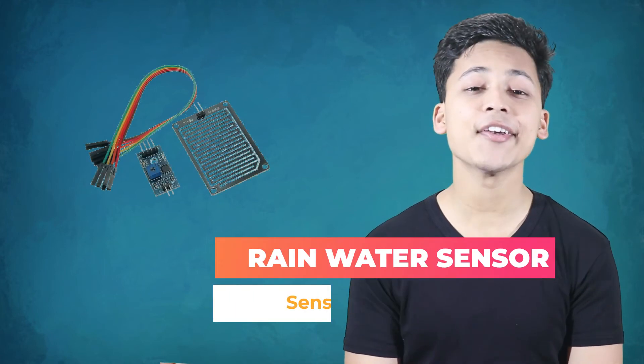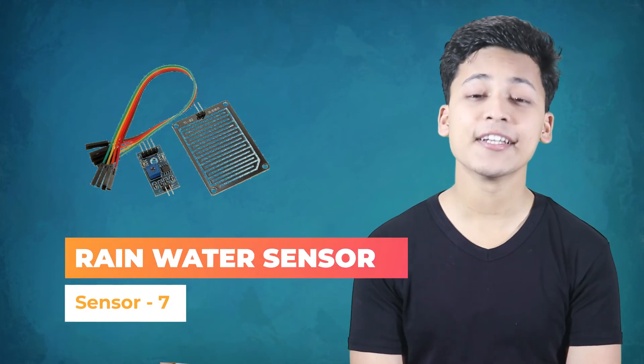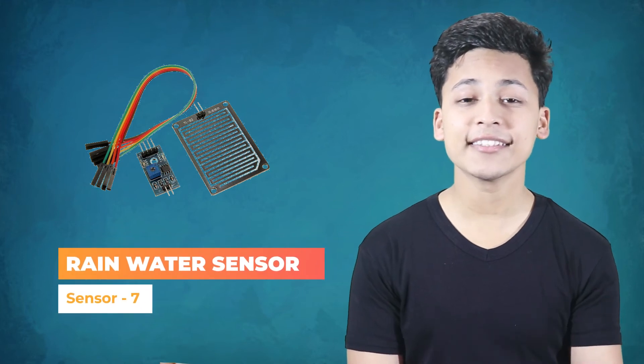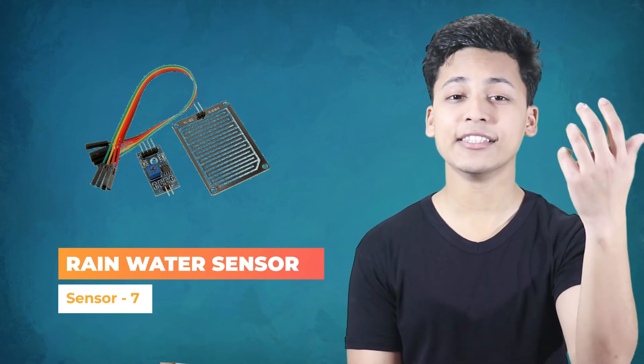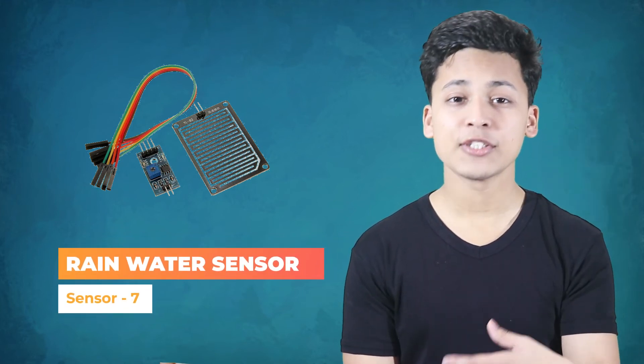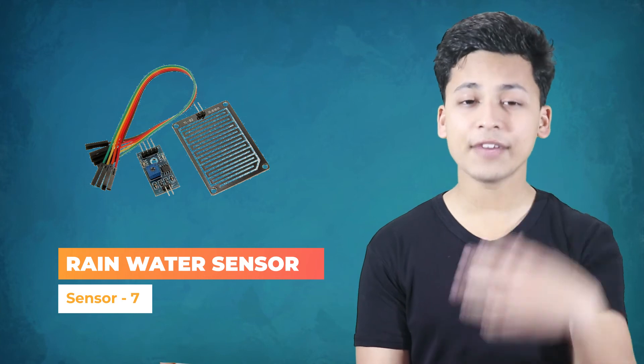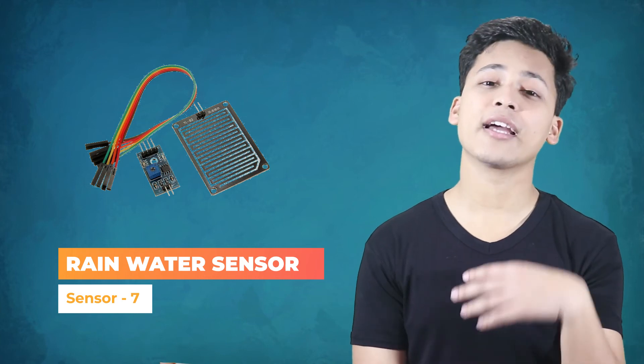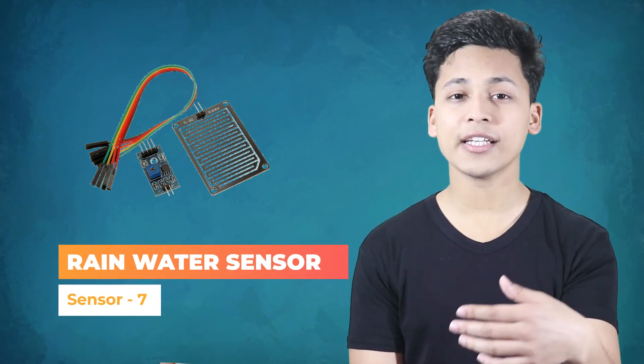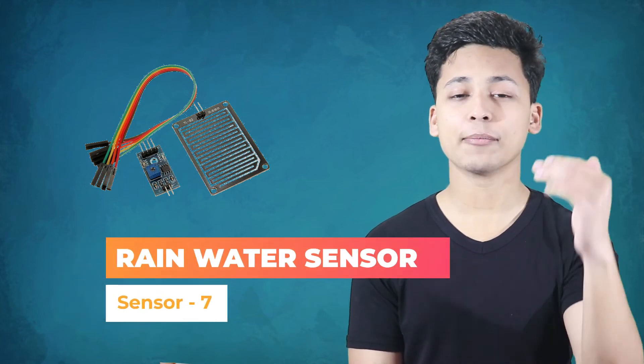The last sensor is the humidity and rain detection sensor. This sensor can actually detect rainwater. For example, when it rains you can trigger an action like automatically putting a shade over your car.